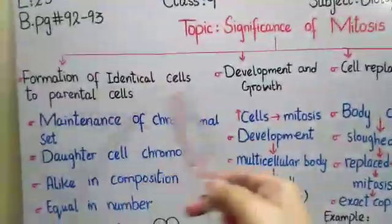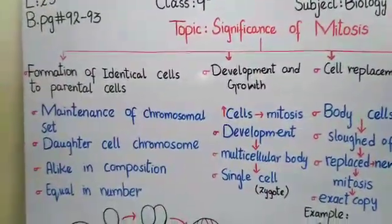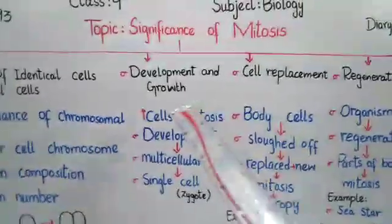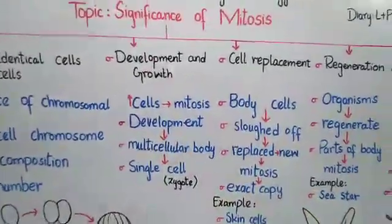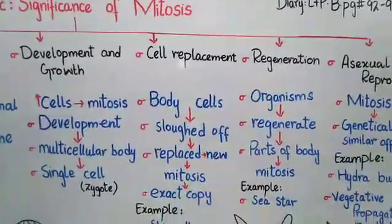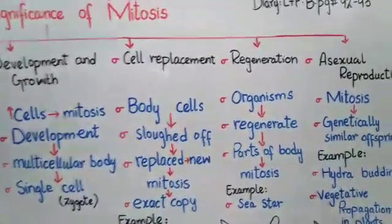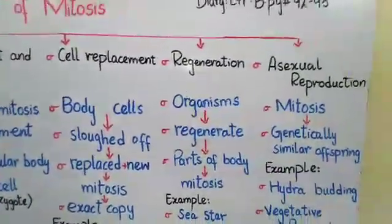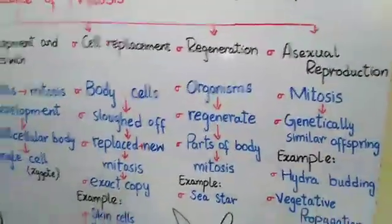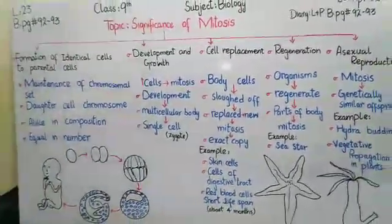The key points of significance of mitosis are: first, formation of identical cells to the parental cells, meaning daughter cells are like the parents; second, development and growth in the body; third, cell replacement; fourth, regeneration; and fifth, asexual reproduction. So we will see how mitosis plays a significant role in each of these.